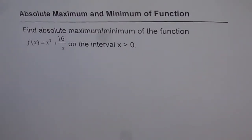Absolute maximum and minimum of a function. Find absolute maximum minimum of the function f(x) = x² + 16/x on the interval x > 0.